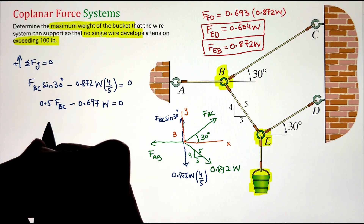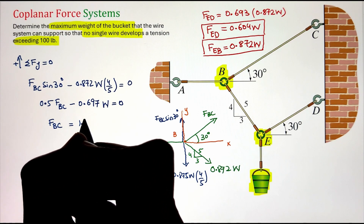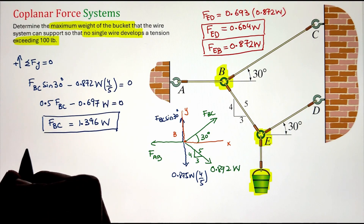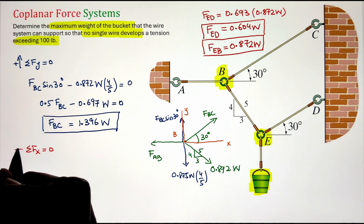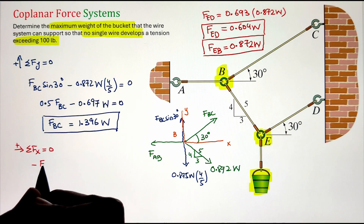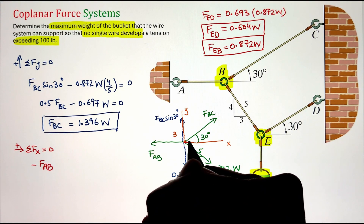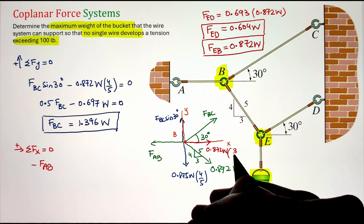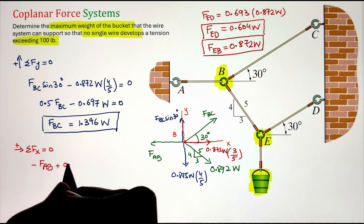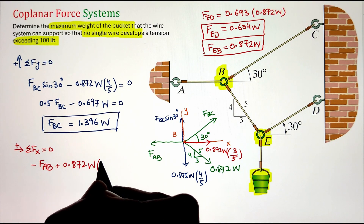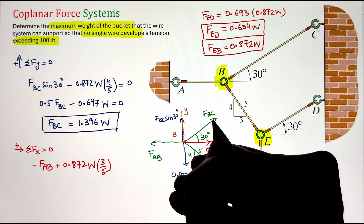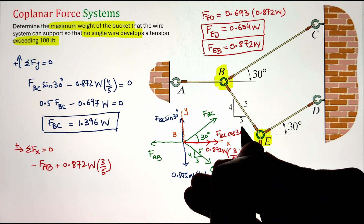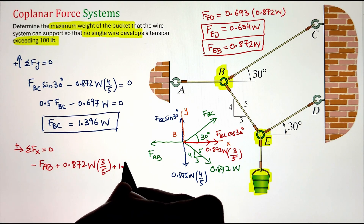Now, writing the summation of forces along the horizontal direction equals zero: FAB is directed toward the negative x-axis, so it is taken as negative. The horizontal component of the 0.872W force from wire BE contributes positively, calculated by multiplying with 3 over 5. The horizontal component of FBC is found by multiplying it with cos 30, and since it acts in the positive x-direction, it is also positive. Setting the sum of all three equal to zero and simplifying gives FAB = 1.732W.